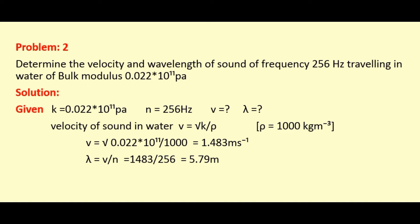Next we find the value of lambda. The formula is lambda equals V by N, velocity divided by frequency. The velocity value is 1483 divided by N value 256. Multiplying these two values, we get the answer 5.79 meter.